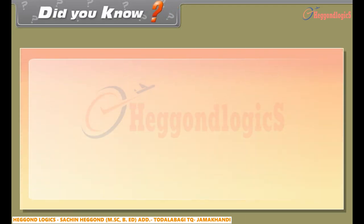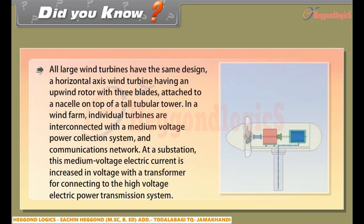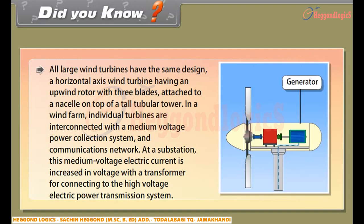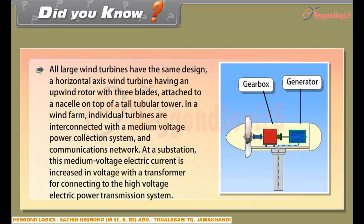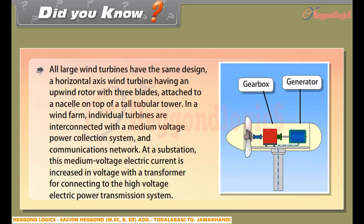Did you know? All large wind turbines have the same design: a horizontal axis wind turbine with an upwind rotor with three blades, attached to a nacelle on top of a tall tubular tower. In a wind farm, individual turbines are interconnected with a medium voltage power collection system and communications network. At a substation, this medium voltage electric current is increased in voltage with a transformer for connecting to the high voltage electric power transmission system.